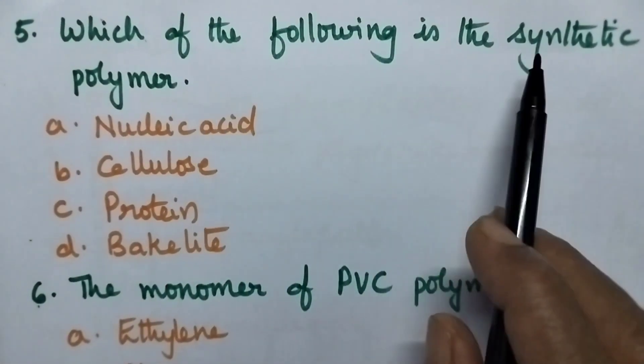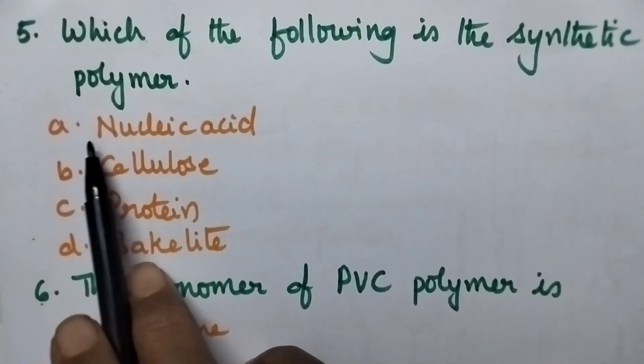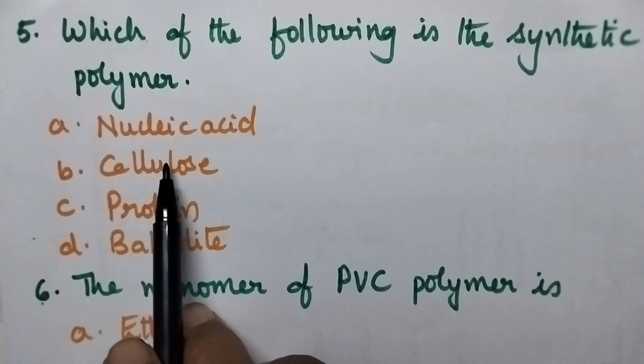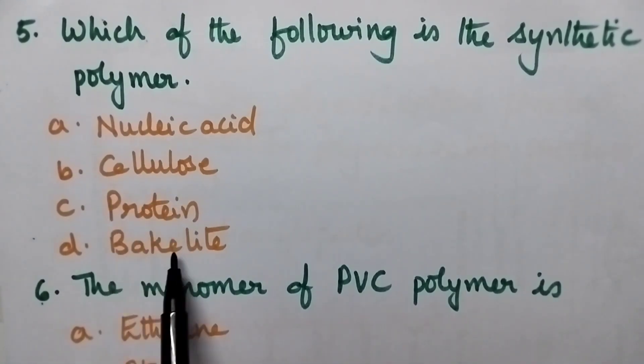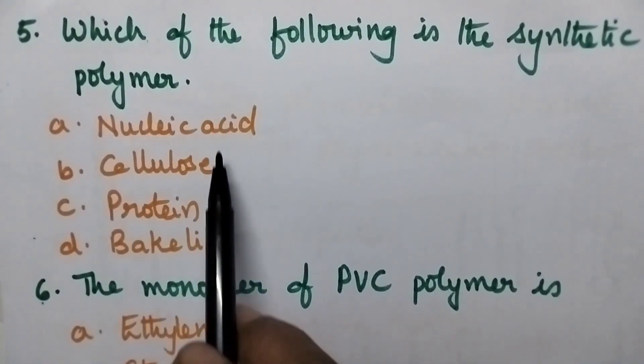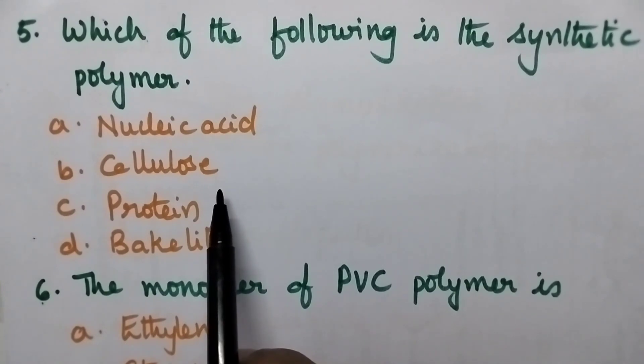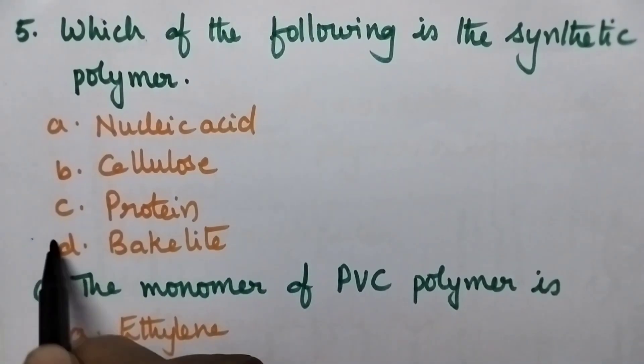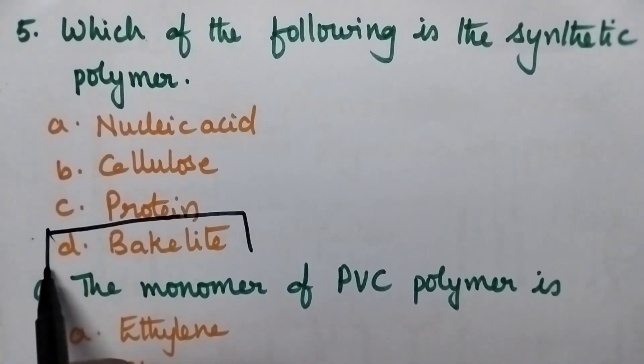Which of the following is a synthetic polymer? Option A. Nucleic acid, B. Cellulose, C. Protein, D. Bakelite. The first three options consist of natural polymers. So option D. Bakelite is the right answer.